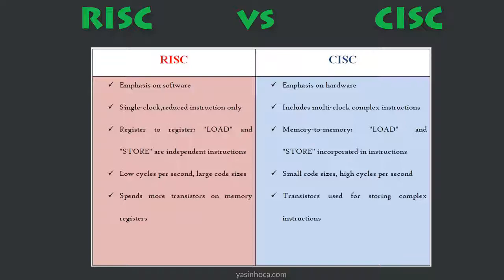CISC has small code sizes but high cycles per second, while RISC has low cycles per second but large code sizes. CISC uses transistors for storing complex instructions, whereas RISC spends more transistors on memory registers.